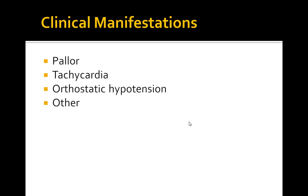There's tachycardia, orthostatic hypotension, and a variety of other symptoms such as jaundice if the patient is undergoing hemolysis, splenomegaly in cases of thalassemia or neoplasm, petechiae or purpura if there's a bleeding disorder, glossitis in iron, folate, or vitamin B12 deficiency, koilonychia in iron deficiency, and neurological abnormalities in vitamin B12 deficiency.